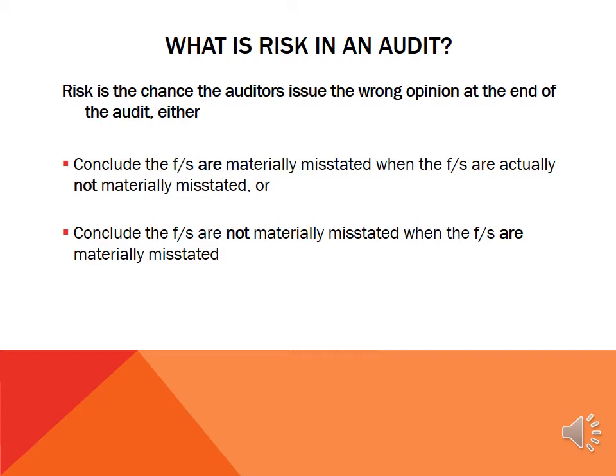That is, the auditors say there's a problem, but the auditors are wrong — there is no problem. The second way auditors might be wrong in issuing an opinion is that they conclude the financial statements are not materially misstated when they in fact are materially misstated.